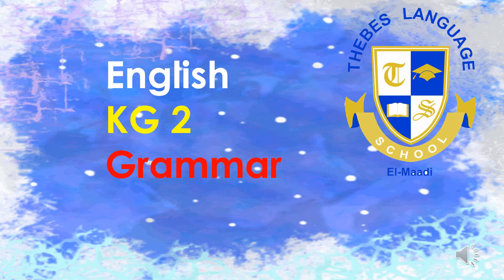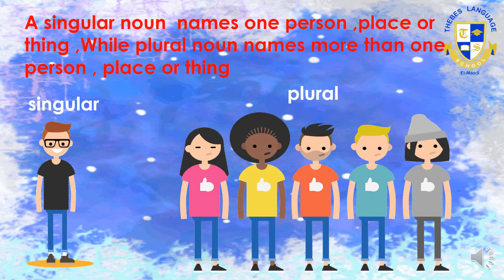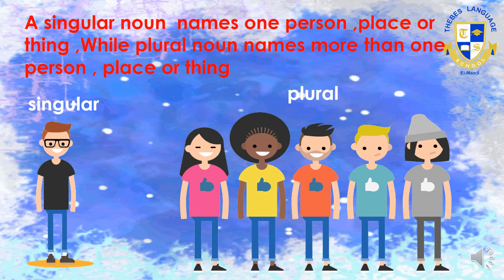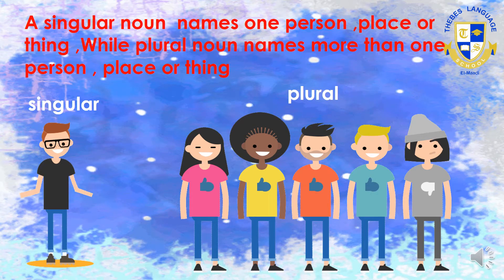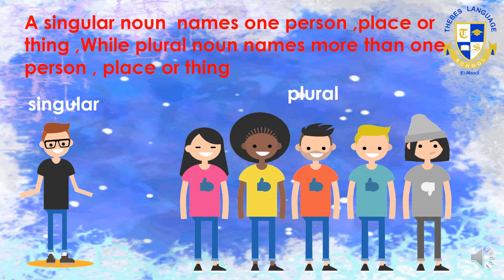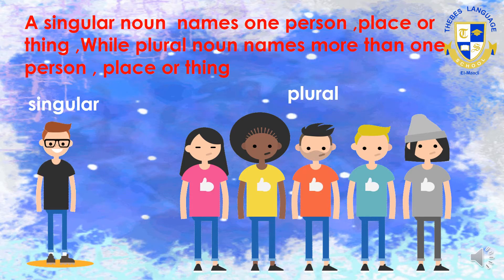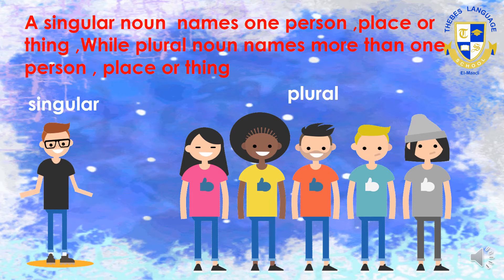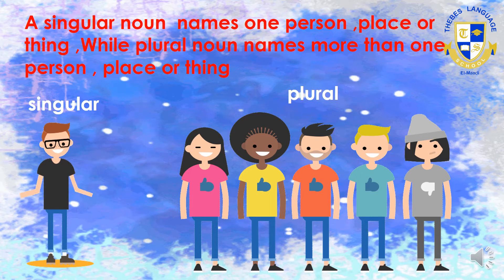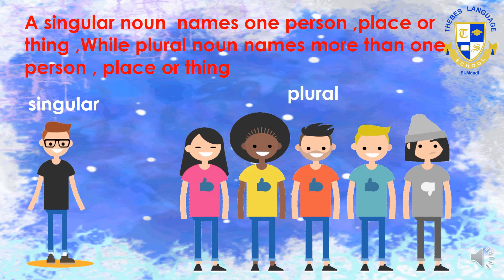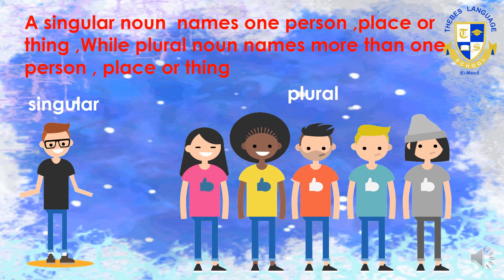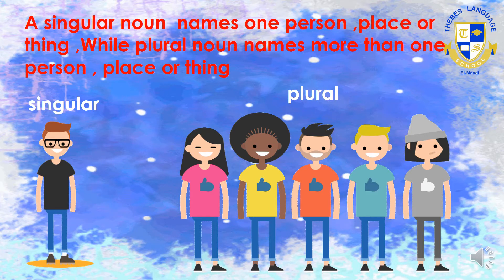KG2 Grammar, Verb to be. A singular noun names one person, place, or thing. A plural noun names more than one person, place, or thing. You can see just one boy on the left side of this page — singular, just one person. While you can see five friends on the other side of the page — plural, more than one person.